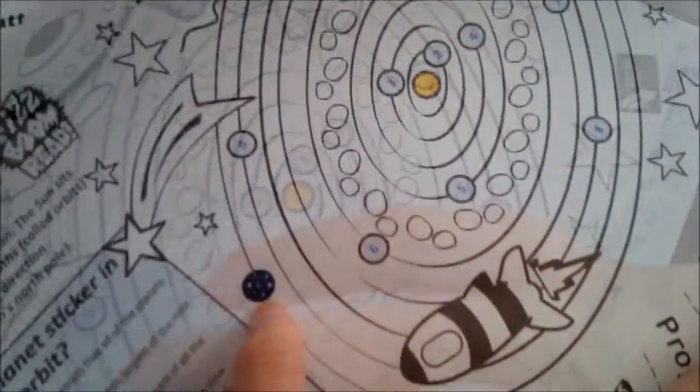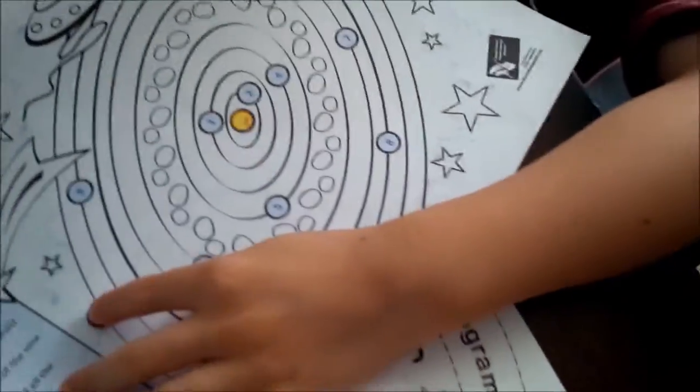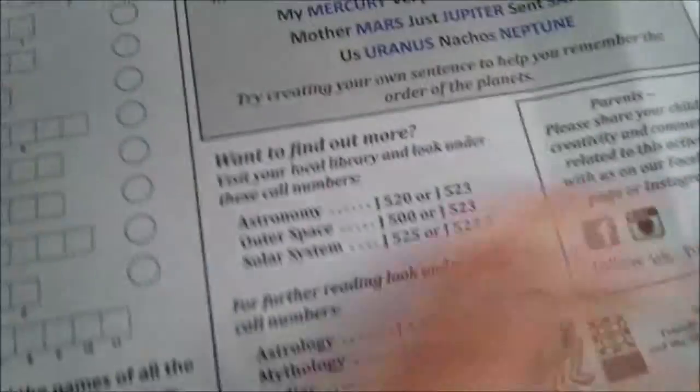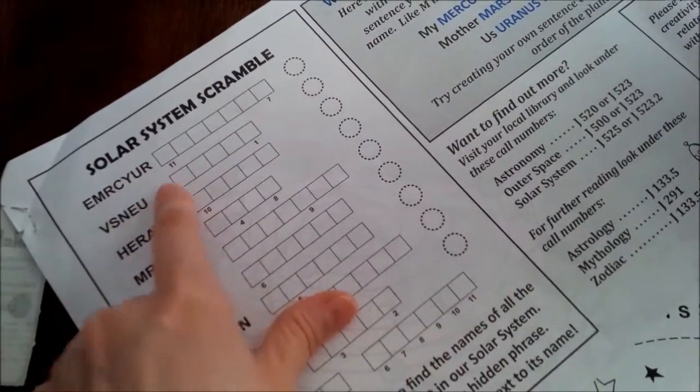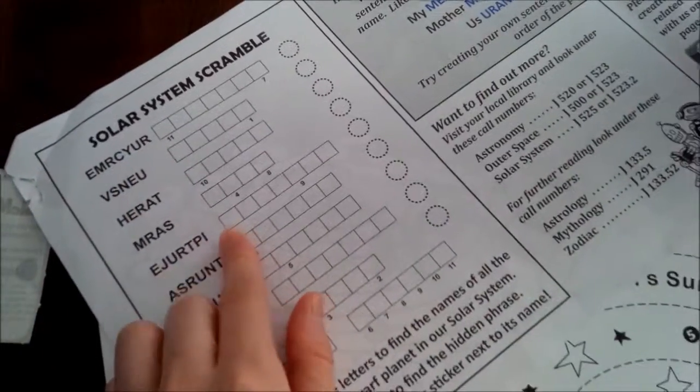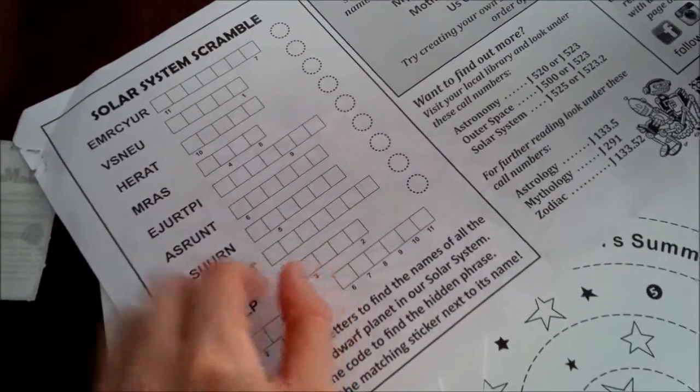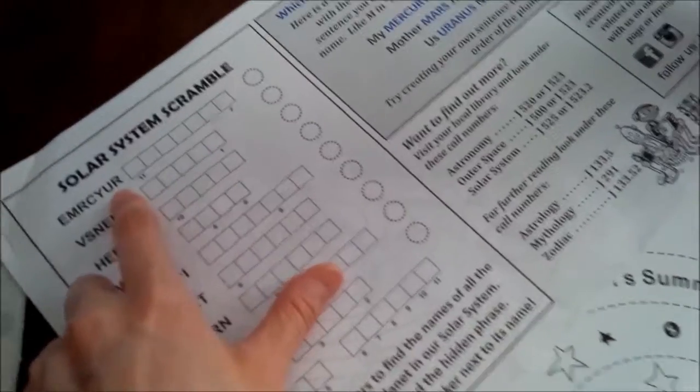What's this one? Star. And this is in the back, so more activities. Unscramble the words. Do you know what that is? Can you unscramble it?